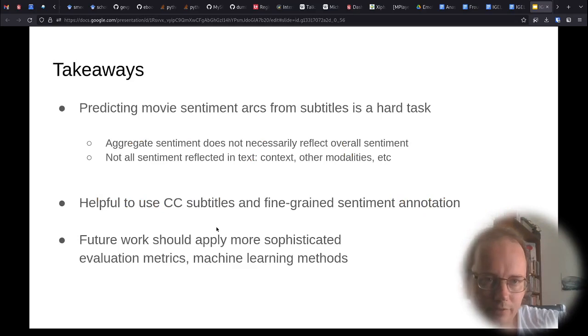What kind of takeaway do we have here? Predicting movie emotion arcs from subtitles is a hard task, because the aggregate sentiment does not necessarily reflect the overall sentiment of the scene. Moreover, not all of the sentiment is reflected in the text and the dialogue. There is context to the movie, there are other modalities which might be important, and it's hard to capture this by a sentiment analysis tool. We found that it's helpful to use closed caption subtitles, and it's helpful to make a more fine-grained sentiment annotation with at least five labels. And the LOESS smoothing seems to be a good smoothing method, because it applies more weights to the more closer data points.